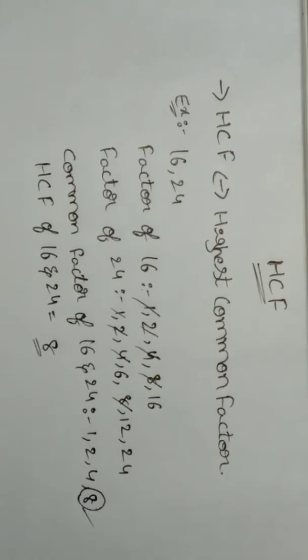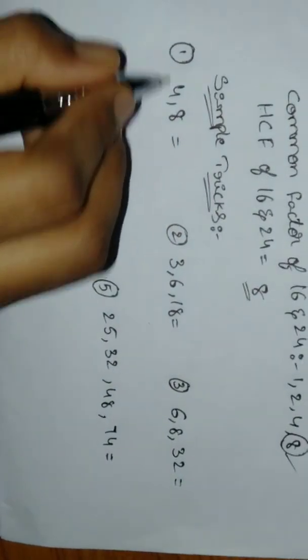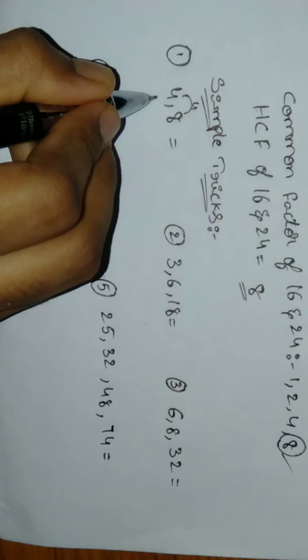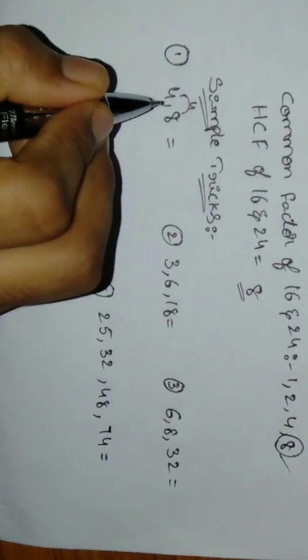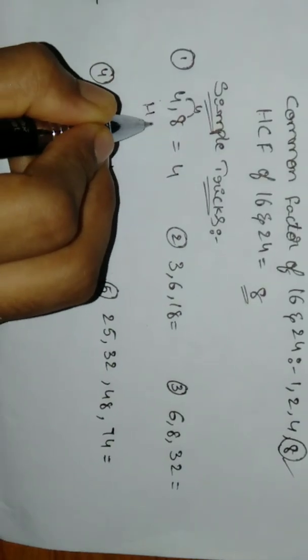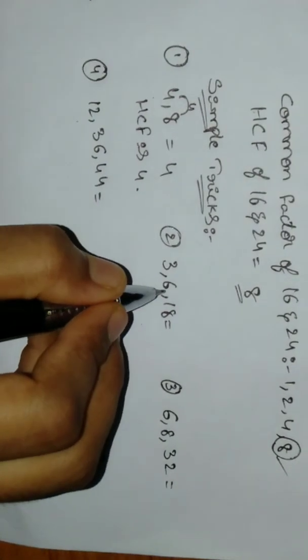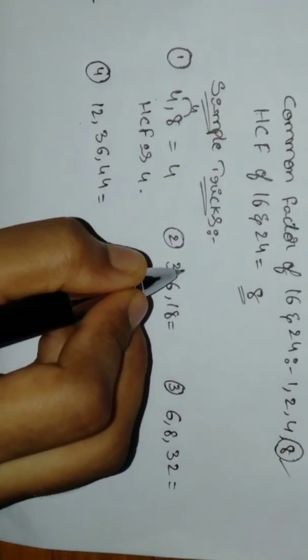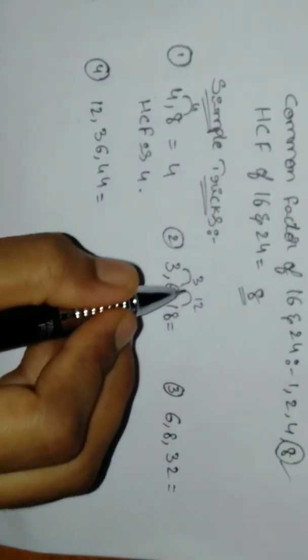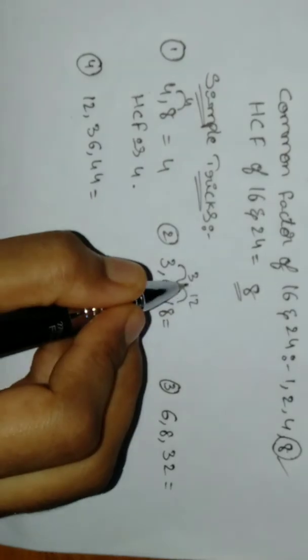Now let's talk about simple tricks in this process. First one: find the HCF of 4 and 8. Let's check the factors of 4 and 8. Second one: 3, 6, 18. If you find the HCF of 3, then you find the HCF of 6. So if you find the HCF, the HCF of 4 and 8.